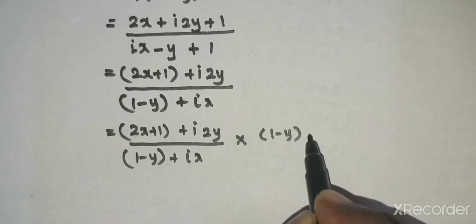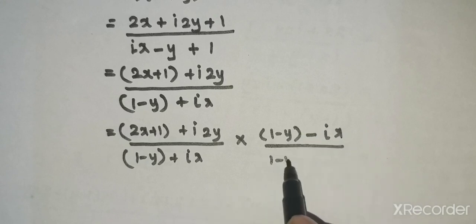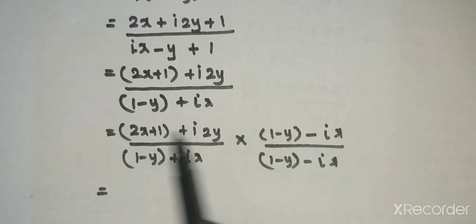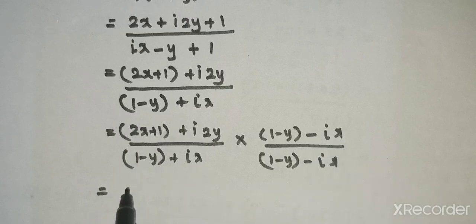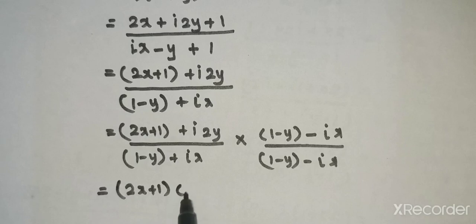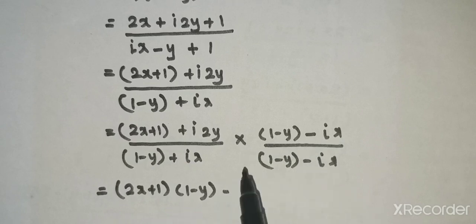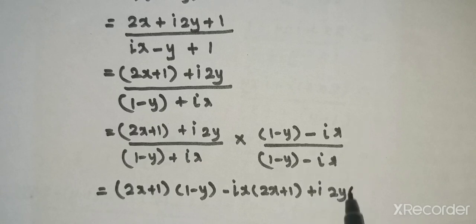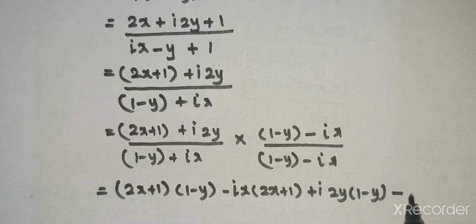Multiplying out: the numerator is 2x plus 1 plus i times 2y, times 1 minus y minus ix. Expanding: first term is 2x plus 1 times 1 minus y, next term minus 2x plus 1 times ix, then plus i times 2y times 1 minus y, and plus i squared times 2y times x.